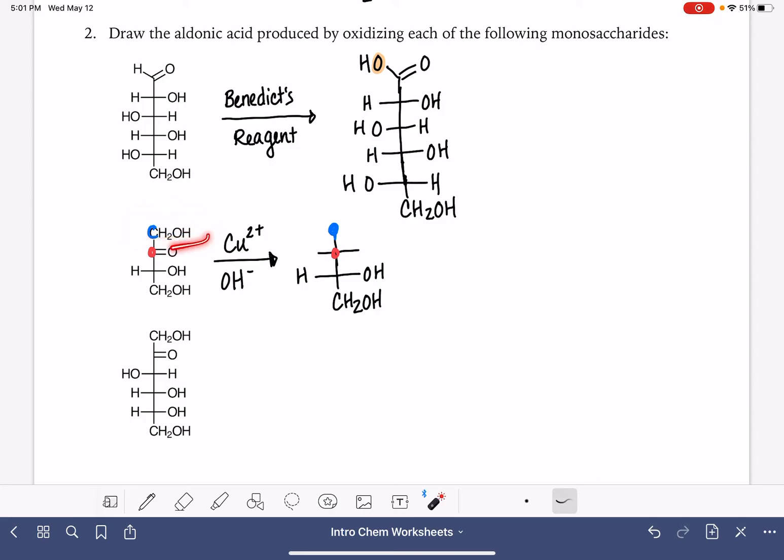The carbon on the top of this chain, even though it originally was a CH2OH, it's going to end up matching the top carbon of an aldose. So up there at the top, we are going to end up with the same carbon-oxygen double bond. And then in this position right here, we're just going to get an OH group.